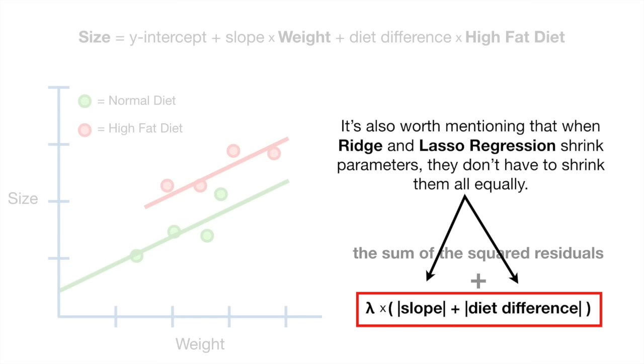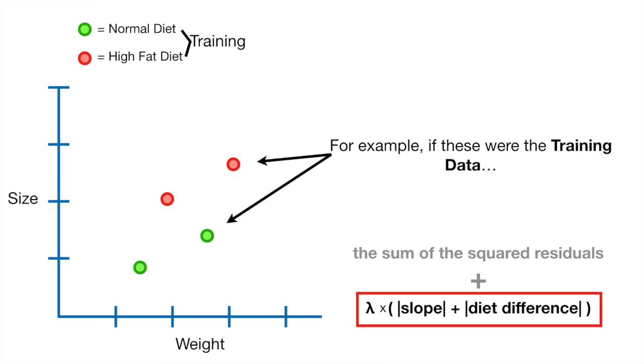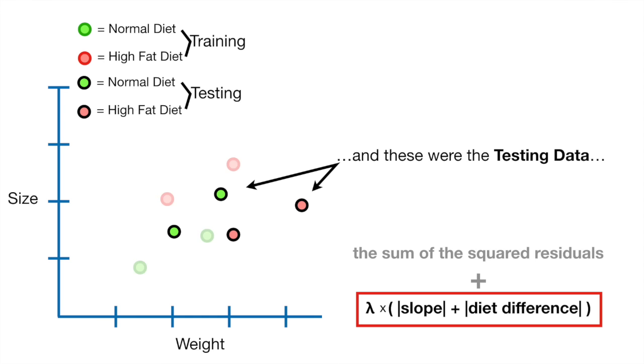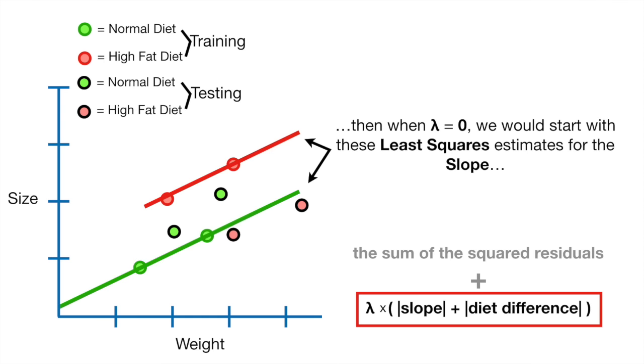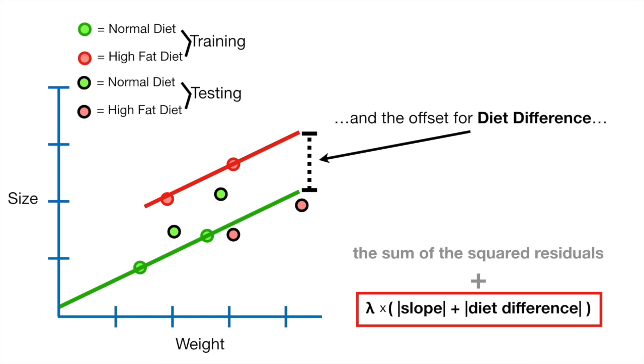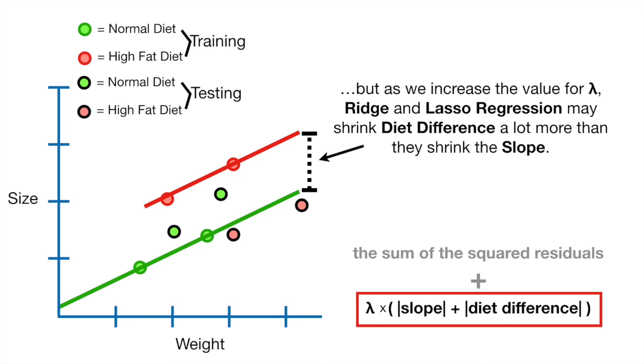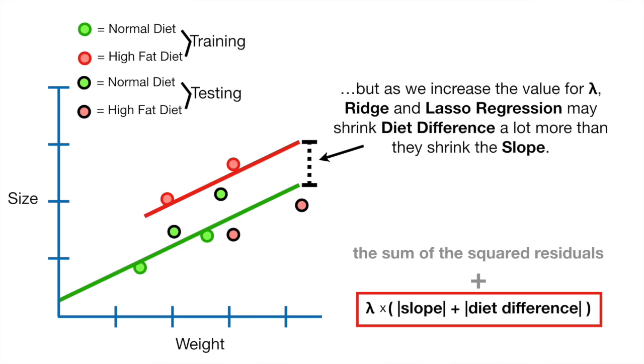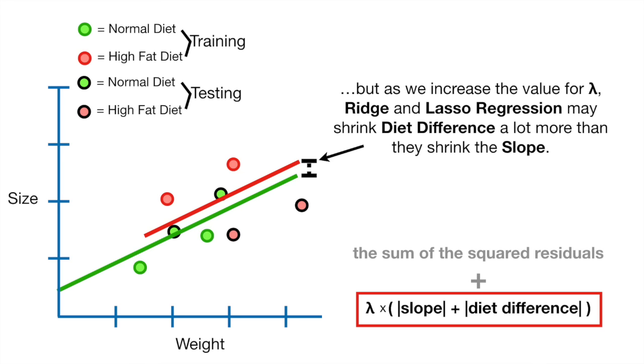It's also worth mentioning that when Ridge and Lasso Regression shrink parameters, they don't have to shrink them all equally. For example, if these were the training data, and these were the testing data, then when lambda equals zero, we would start with these least squares estimates for the slope and the offset for diet difference. But as we increase the value for lambda, Ridge and Lasso Regression may shrink diet difference a lot more than they shrink the slope.